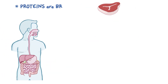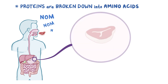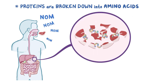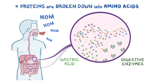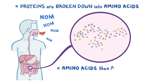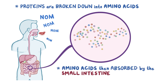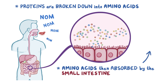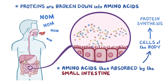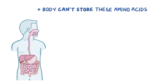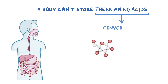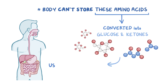The proteins you eat are broken down into amino acids in the gastrointestinal tract by gastric acid and digestive enzymes. The amino acids are then absorbed by the small intestine into the bloodstream, where they travel to the cells of the body and are used for protein synthesis. Since the body can't store these amino acids, any extra amino acids are converted into glucose or ketones and used for energy.